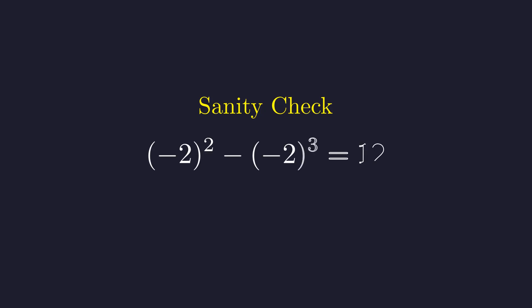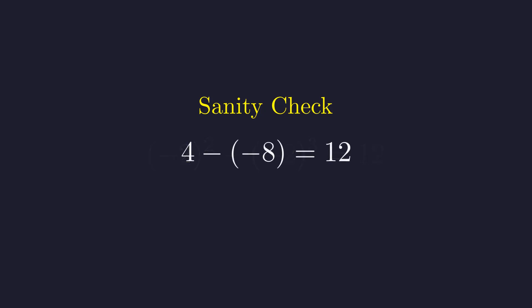Let's quickly verify this solution with the original equation. Substituting negative 2 for x simplifies to 4 minus negative 8, which equals 12. ✓